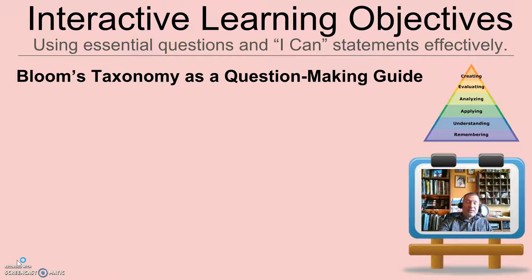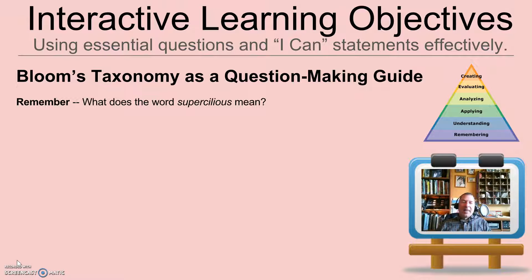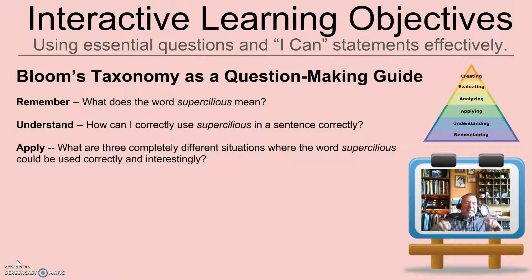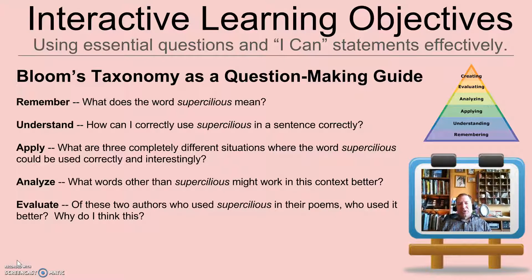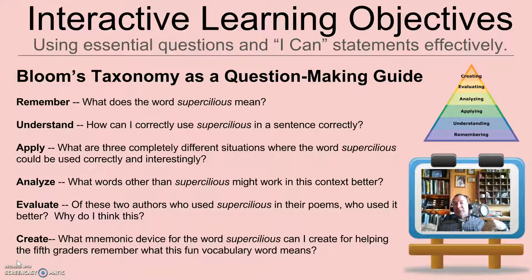You can always use Bloom's to make questions. Here are questions I created for a simple concept — I'm just going to teach you one word — to show how a question moves through Bloom's. 'What does the word mean?' is the remember level. 'How can I correctly use it?' is the understanding level. 'What's a different place I could use this?' is the apply level. 'What synonyms might work better than supercilious?' forces them to analyze. 'If we found two poems with supercilious, which poet used it better and why?' is the evaluate level. And for create: let's create a mnemonic device for the fifth graders next door to help them remember what this vocabulary word means. You don't have to use all six, but that's moving through Bloom's.